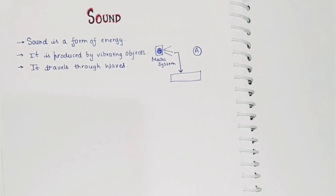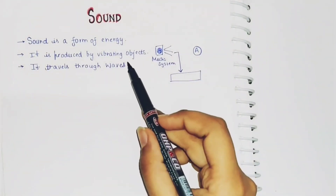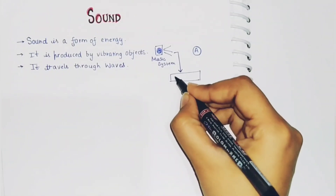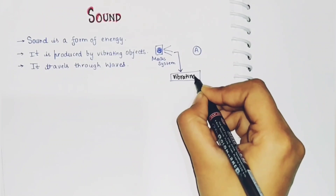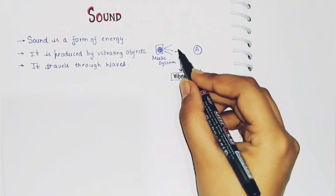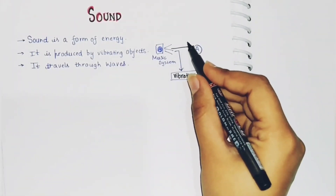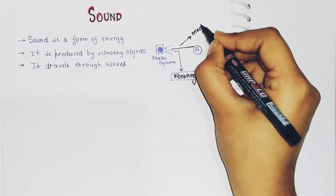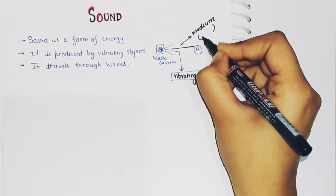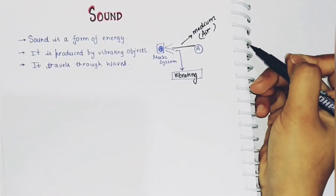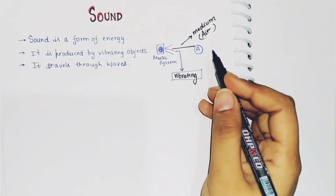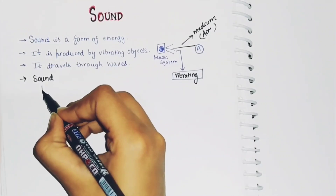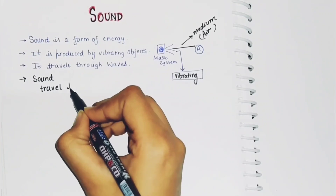Sound is produced by vibrating objects. For example, a music system — it is vibrating and producing sound. Sound travels through a medium, and the medium over here is air. So sound travels through medium, and it travels from vibrating objects.